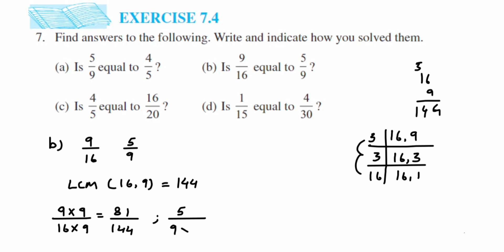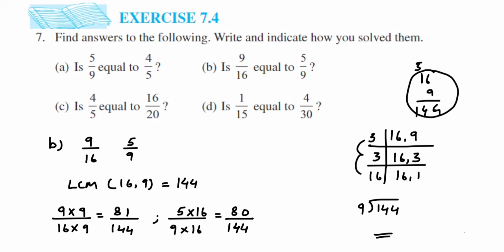For the second number 5/9: we need to multiply by 16 to get denominator 144, since 9×16 is 144. If you're unsure, divide 144 by 9 to get 16. Multiply 16 in numerator and denominator: 16×5 is 80 and 9×16 is 144, giving 80/144. Now comparing: 81/144 and 80/144 — numerators 81 and 80 are not equal, so the fractions are not equal.